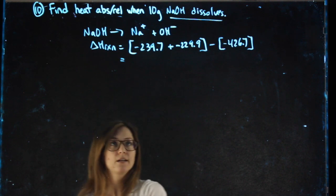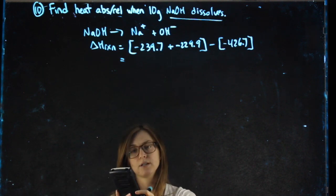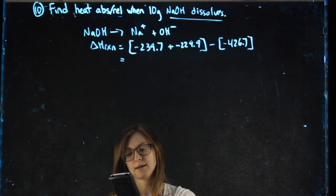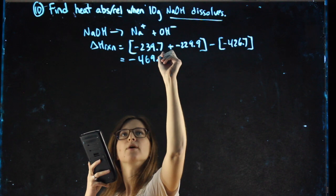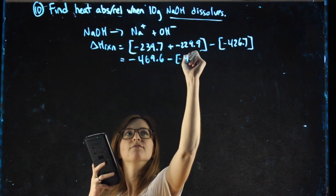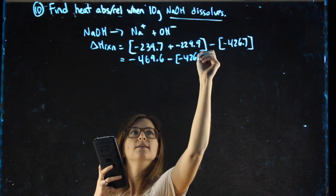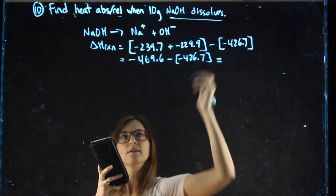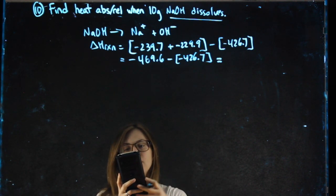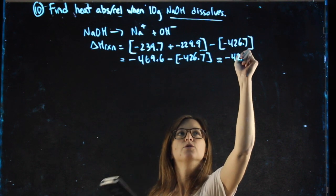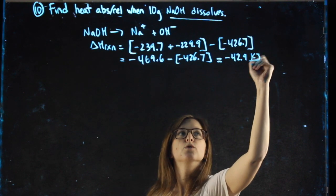Solving my heat of reaction: negative 239.7 plus negative 229.9 equals negative 469.6, minus negative 426.7.